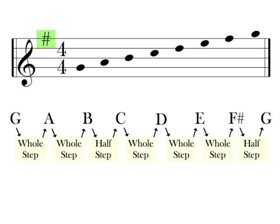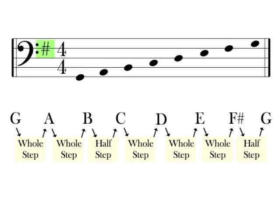F sharp being the only accidental in the G major scale is the key signature of the key of G major. Whenever you see a sharp placed on this line of a staff with a treble clef, or this line of a staff with a bass clef, you will know that you are playing in the key of G.